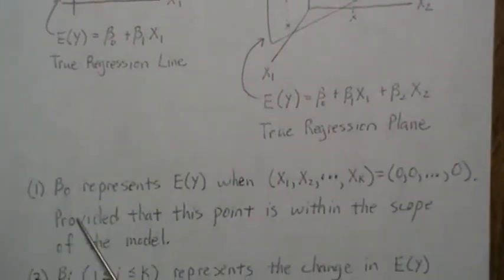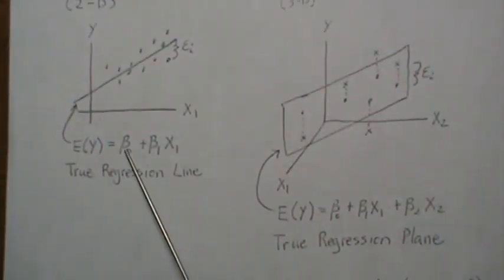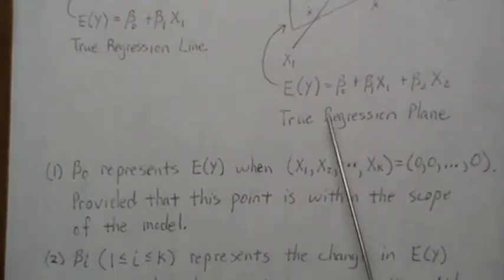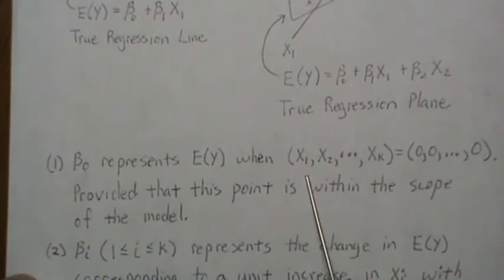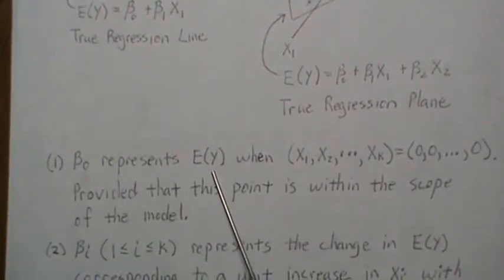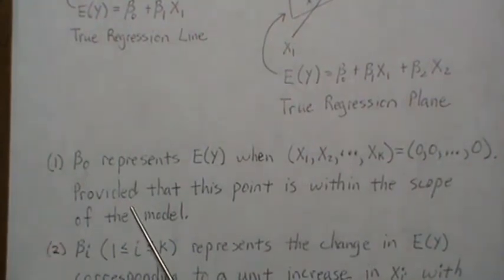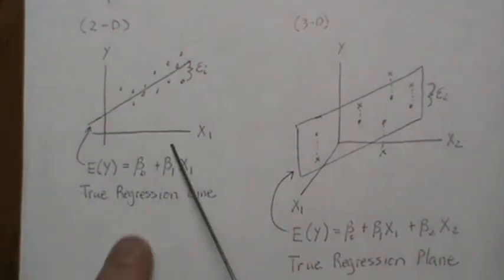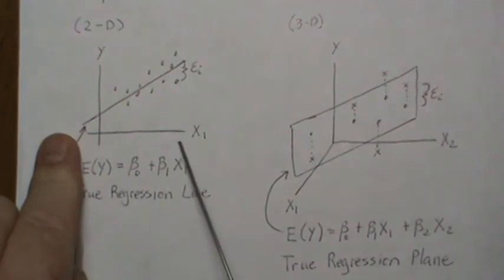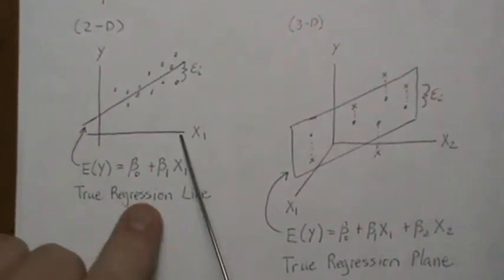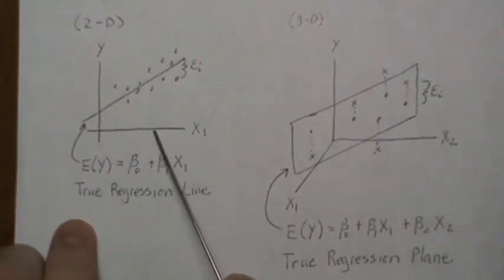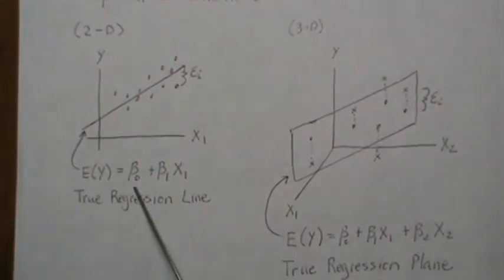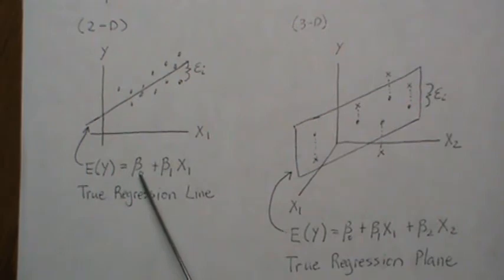Now, beta 0, in the multiple linear regression setting where you have k predictors, beta 0 represents the average y when all our predictor variables are set at 0. Now, this is only valid when that point is within the scope of the model. In simple linear regression, we spend a little more time describing scope. But what it means is that when you collect your x data, it has to kind of go and cover when x is 0. For this plot right here, the scope is from there to there.